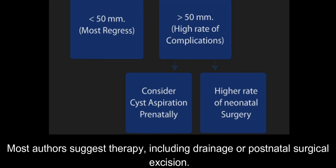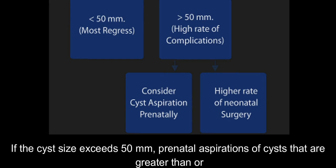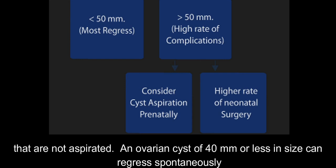Most authors suggest therapy, including drainage or postnatal surgical excision, if the cyst size exceeds 50 mm. Prenatal aspirations of cysts that are greater than or equal to 50 mm result in significantly better outcomes than in those cysts of a similar size that are not aspirated.